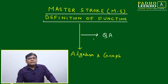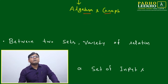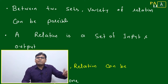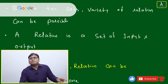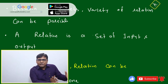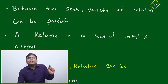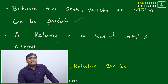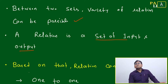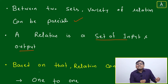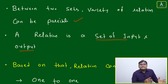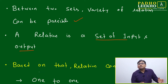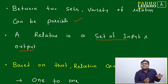This topic is related to algebra and graphs and will affect your quantitative ability preparation. A relation is a set of input and output — or in other words, a set of independent and dependent variables. Input is your independent variable and output is your dependent variable. A set is simply a collection.